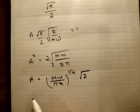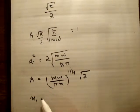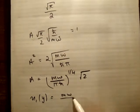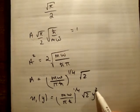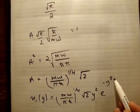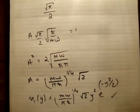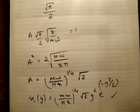And finally then, that means your normalized u₁ of y is equal to m omega over π times h bar to the quarter multiplied by root 2 times y squared e to the minus y squared over 2. So that was pretty straightforward stuff.